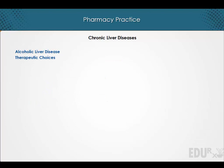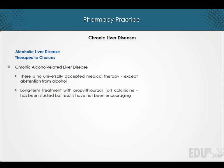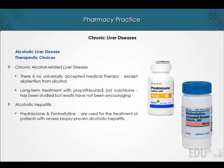With reference to the management of chronic alcohol-related liver disease, it should be noted that there is no universally accepted medical therapy except abstention from alcohol. Long-term treatment with propylthiouracil or colchicine has been studied, but results have not been encouraging. With reference to alcoholic hepatitis, prednisolone and pentoxifylline are used for the treatment of patients with severe biopsy-proven alcoholic hepatitis.